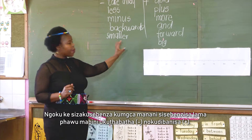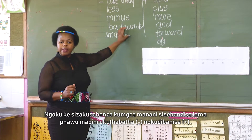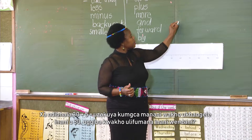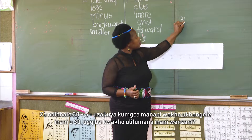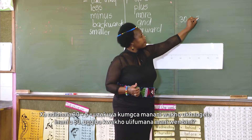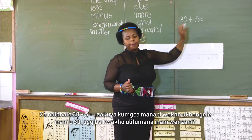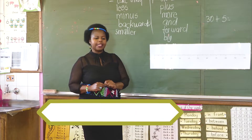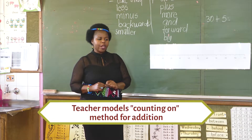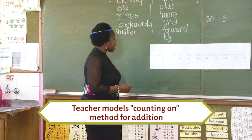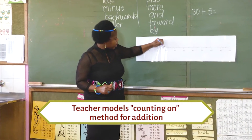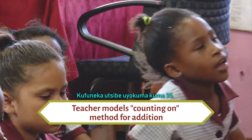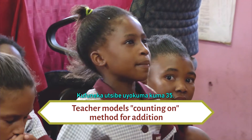So we are going to work on the number line using these two signs — take away and plus. When I write 30 plus 5, you go to your number line and plot the number 30. After plotting, what must you do? You must jump up to number 35.